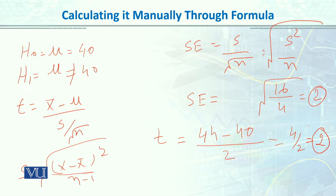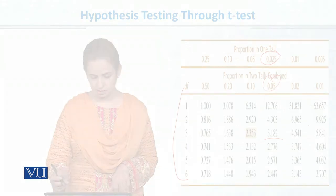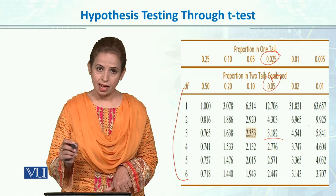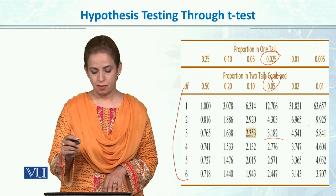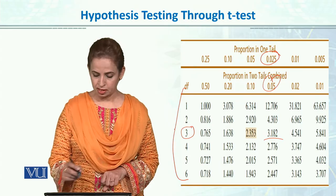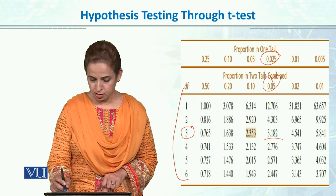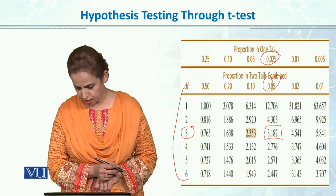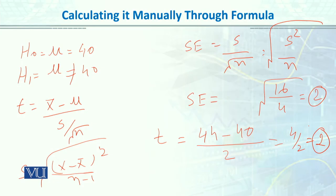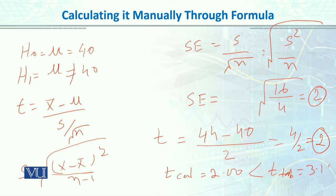Now we compare this to the table value. We look up the t-table. With n equals 4, the degrees of freedom is n minus 1, which is 3. We have alpha 0.05 and a two-tail test, so our critical value from the t-table at df=3 is 3.182. Now we compare: our calculated value is 2 versus the critical value of 3.182.